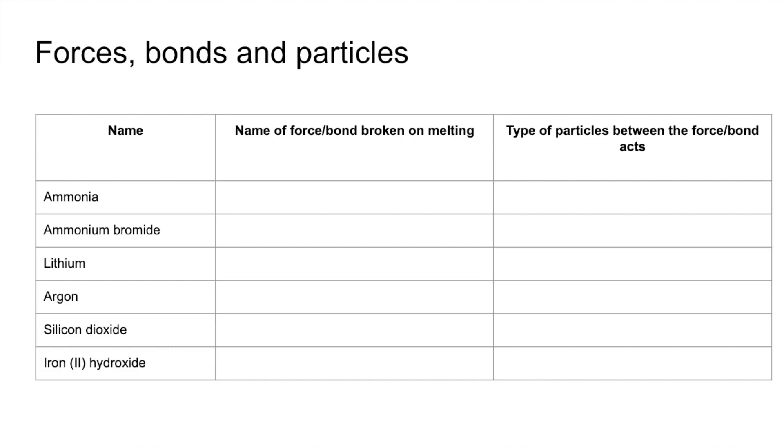So what we're going to do in the second task, it's linked to those six substances again, but now we've got to imagine we've got the substance in a solid state and we've got to name the force or bond that has to be broken to get the substance to melt, and then name the type of particles between which the force or bond acts. So again, if you want to pause the video and then play on for the answers.